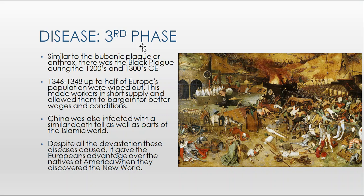The third phase involved the Black Plague during the 1200s and 1300s CE. It appeared on the shores of Sicily and spread through Florence into all of Europe, devastating the population. Approximately half of Europe's population was wiped out between 1346 and 1348. This made workers so scarce that surviving laborers — including serfs, who were essentially slaves — could begin bargaining for better wages and conditions.